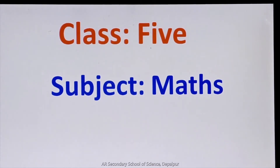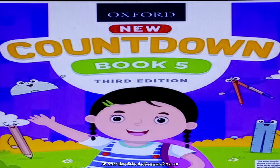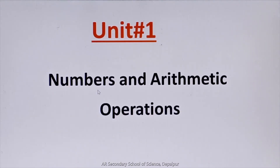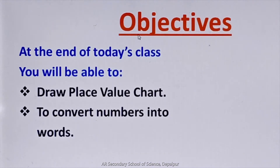In the name of Allah, who is the most beneficent and merciful. Assalamualaikum. Hope you are doing well. Today we are going to start our first unit of maths of class 5. This is your book, Oxford New Countdown, Book 5, 3rd edition. Unit 1: Numbers and Arithmetic Operations. Today our topic is Numbers and Arithmetic Operations, and the subtopic is Place Value Chart and Numbers in Words. The objective is: you will be able to draw a Place Value Chart to convert numbers into words.